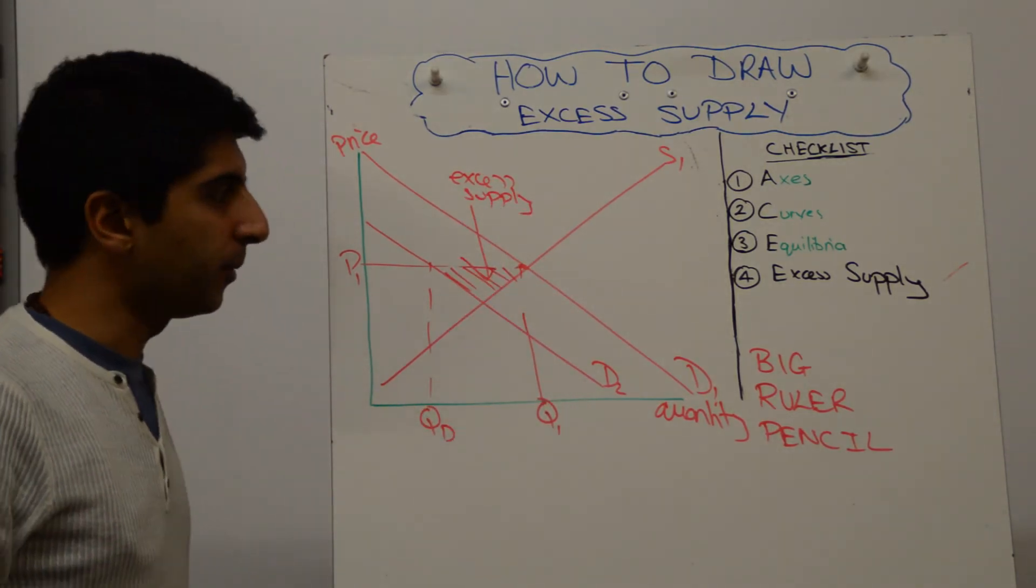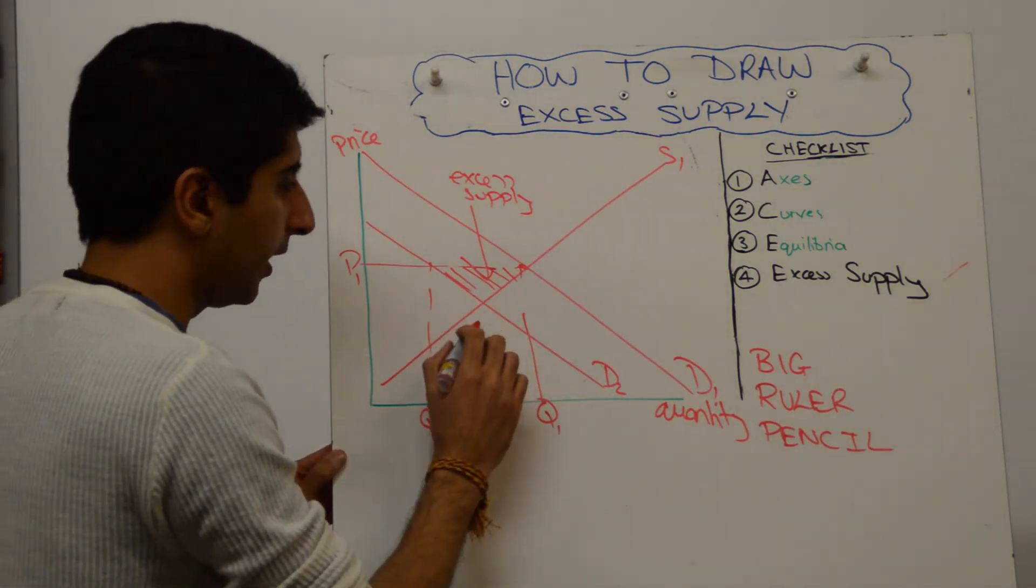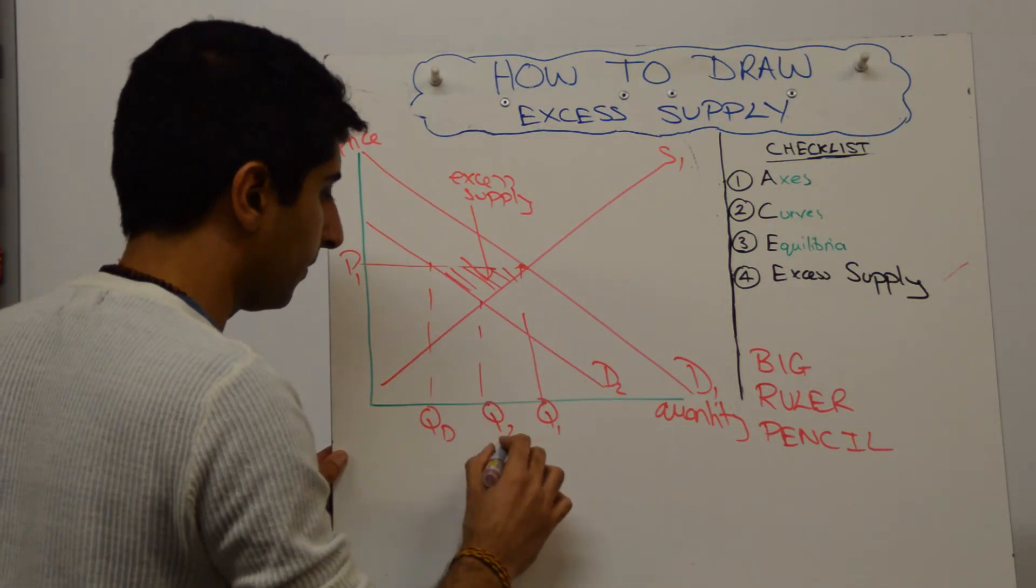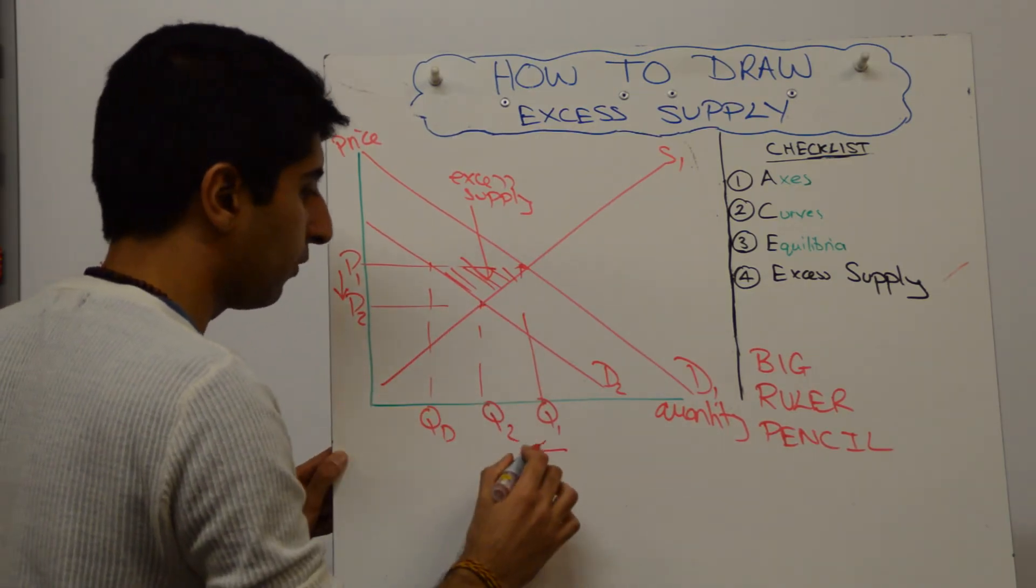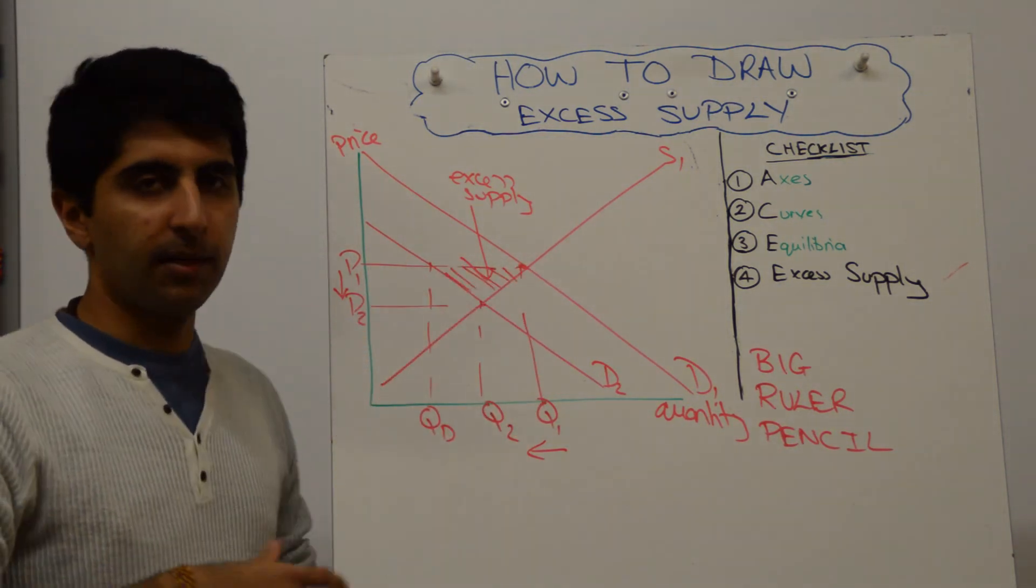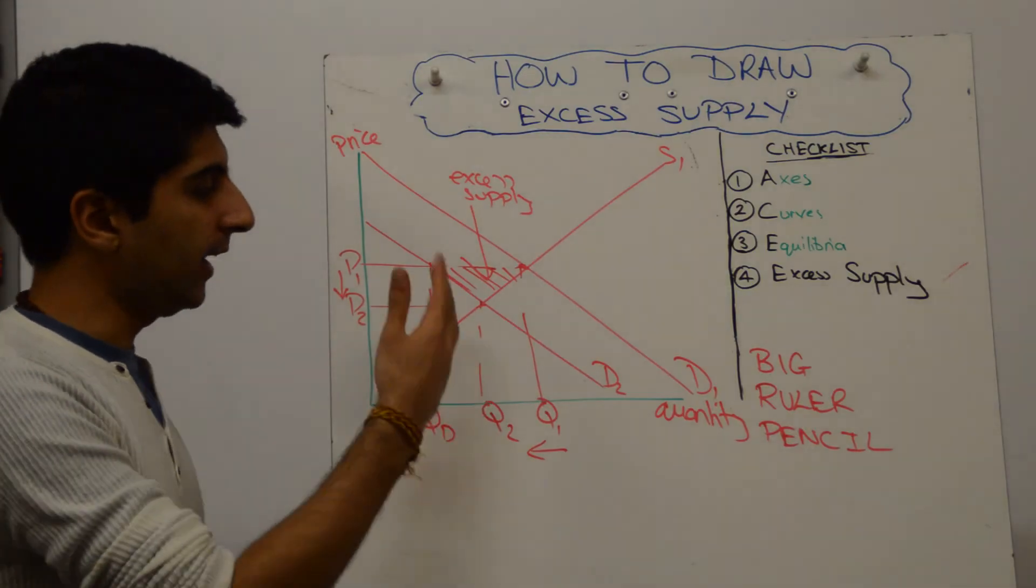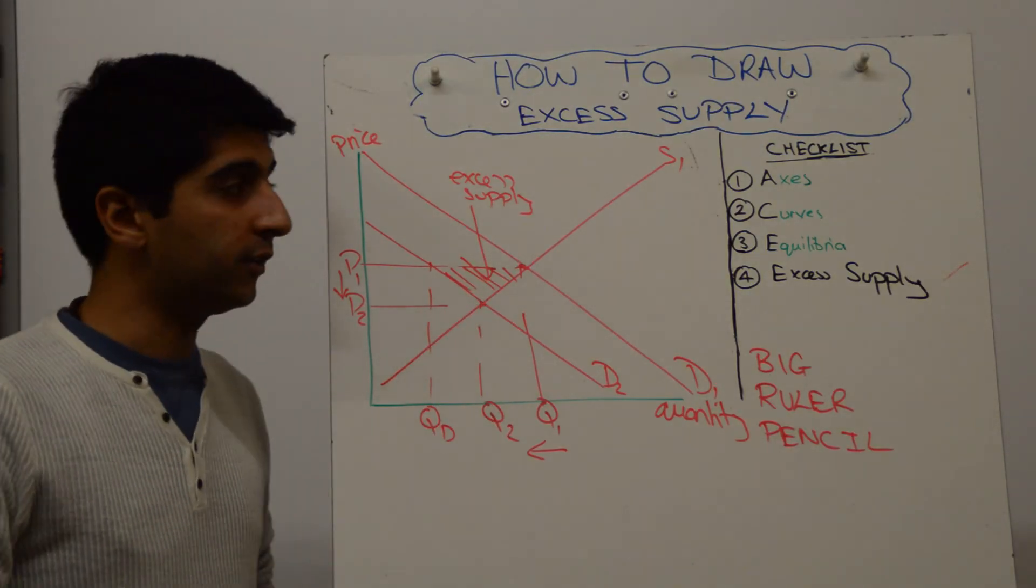And then again, Adam Smith's invisible hand gets to work, and we end up at a new equilibrium of P2 and Q2. All right, so the rationing function, the signaling function, and the incentive function, as it has done in previous videos as explained, takes us to a new equilibrium here. But we have shown the excess supply, which is what we wanted to do.